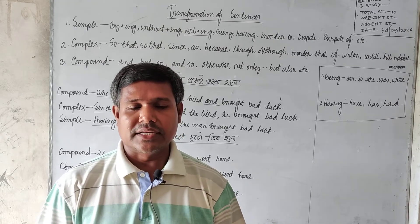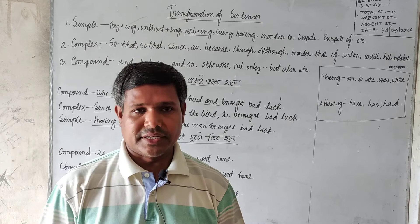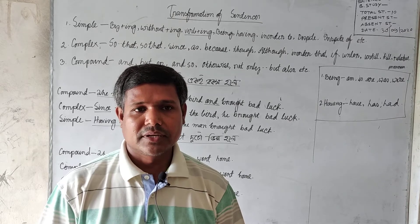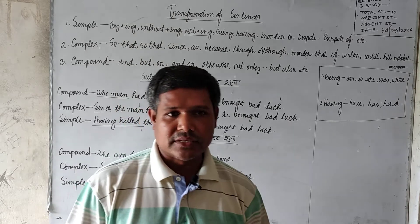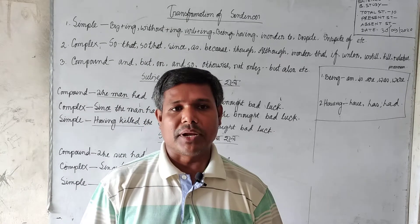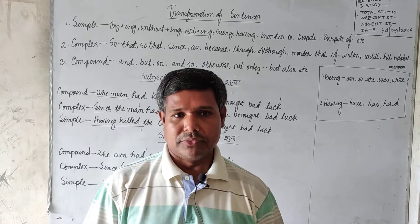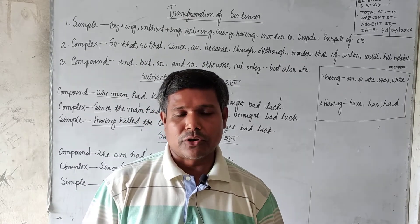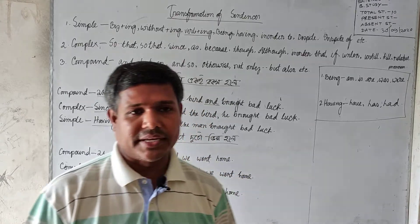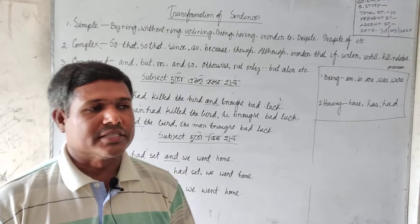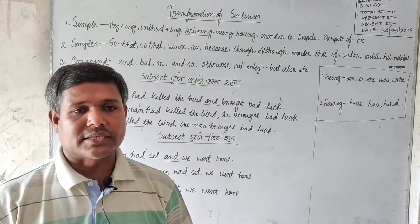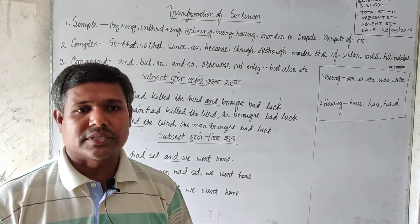About structure, there are three kinds of sentence. They are known as simple, complex, and compound. Now I am going to take a class about simple, complex, and compound sentences.